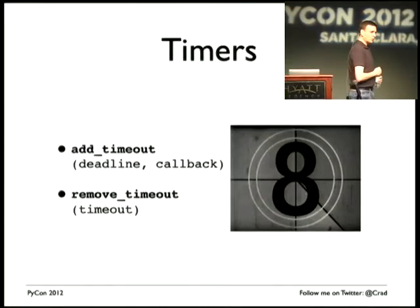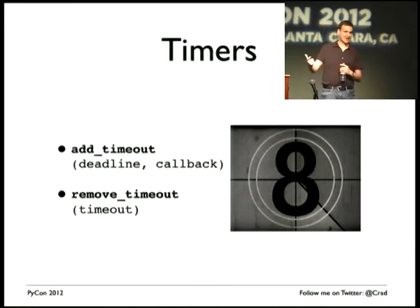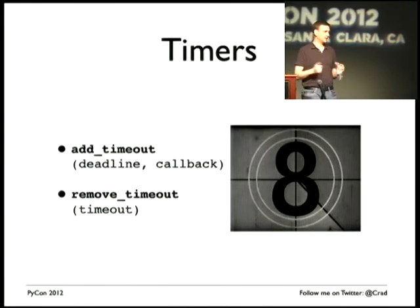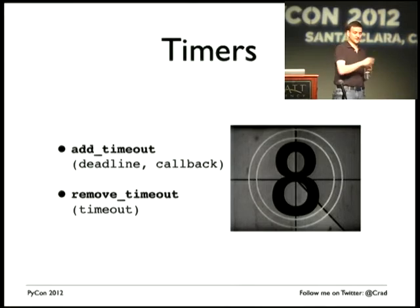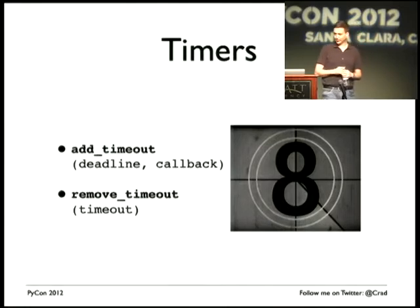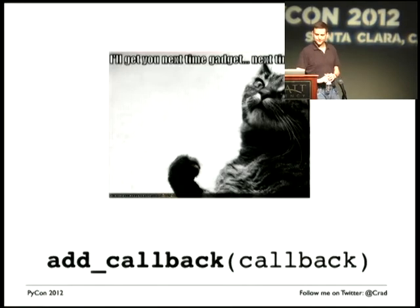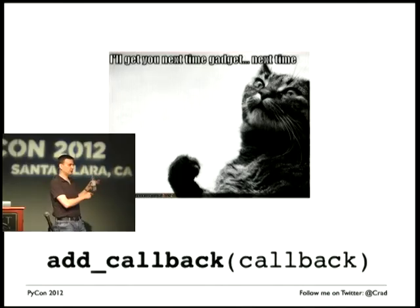One of the nicer features in the IO loop is the ability to have timers. With add_timeout you pass in a deadline — either a Unix epoch timestamp or a time delta — and then a callback. After that amount of time has expired, the callback is called. add_timeout passes back a reference to the timeout structure within the IO loop so that if some event happens and you no longer want that timeout to continue, you can remove it before it fires. You can also have callbacks on the IO loop: the idea is just that next time the IO loop goes through the cycle, call the callback. It's a one-shot — it fires and goes away.